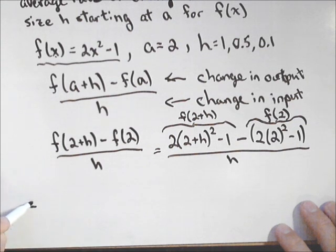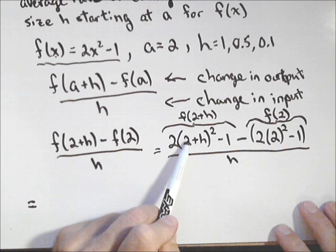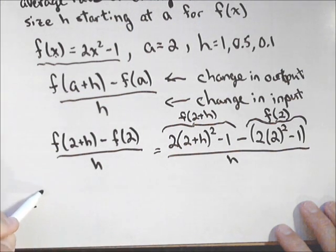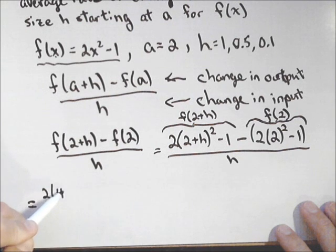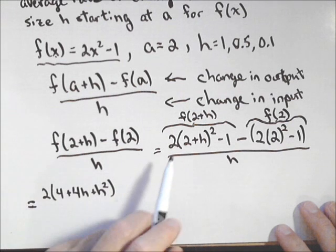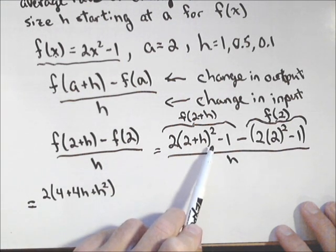Now, we've got some work to do. So, first thing we need to do, this needs to be foiled out. It's 2 plus h times 2 plus h. So, I have 2 times 4 plus 4h plus h squared. If you're not sure where that comes from, do 2 plus h times the quantity 2 plus h and FOIL it out.